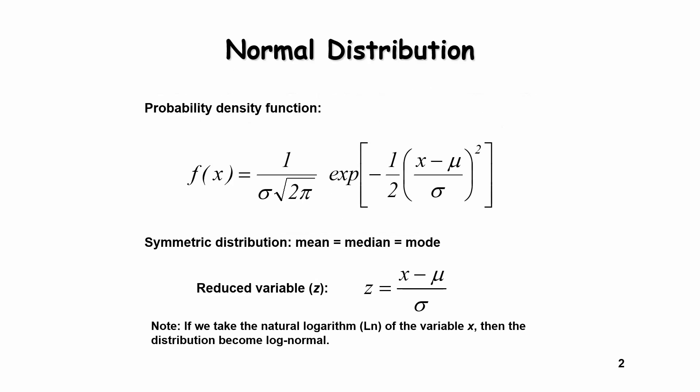In this example, we're going to be looking at one of the simplest distributions that we can use, which is the normal distribution. The normal distribution is given by this equation right here, where one of the characteristics is that the mean equals the median, which is also equal to the mode. One important aspect of the normal distribution is that we can work with the reduced variable z, which is equal to a discharge value, for instance, minus the mean divided by the standard deviation.